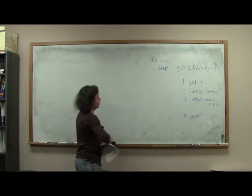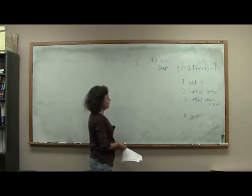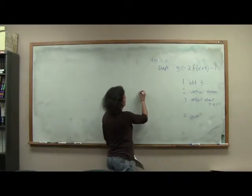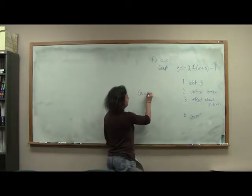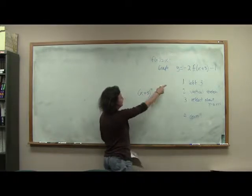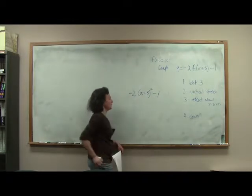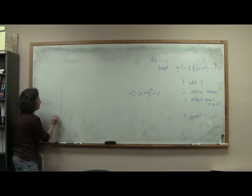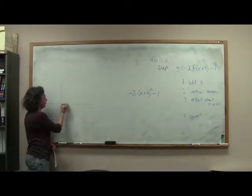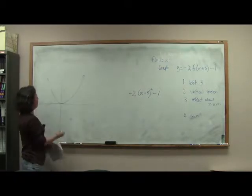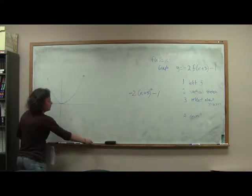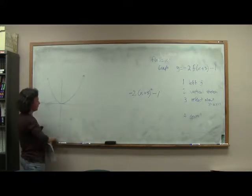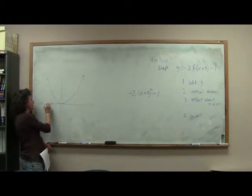So also, if you want to write out the formula, you certainly can, right? F of x plus 3 means we have x plus 3 squared, a negative 2, and then a minus 1. So if we're going to just make a rough sketch of this, let's say this is our graph of y equals x squared. So our first step is to move it to the left 3. So go 1, 2, 3.